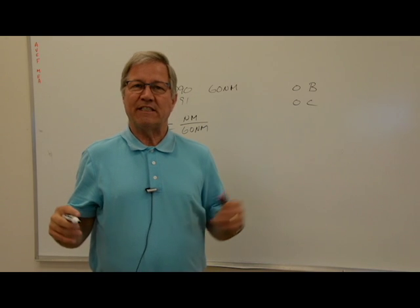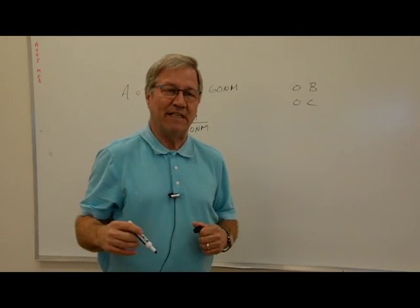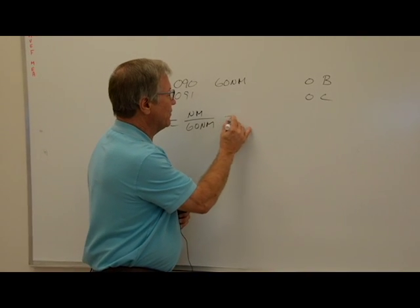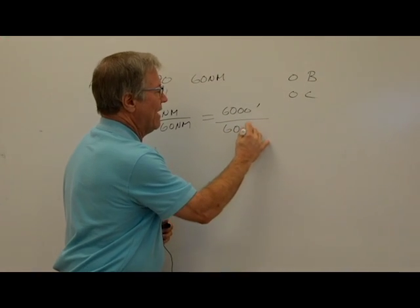Now, if we reduce this down to feet, a nautical mile is a little over 6,000 feet, but we're going to use 6,000 because that's close enough. So one degree equals 6,000 feet at 60 nautical miles.